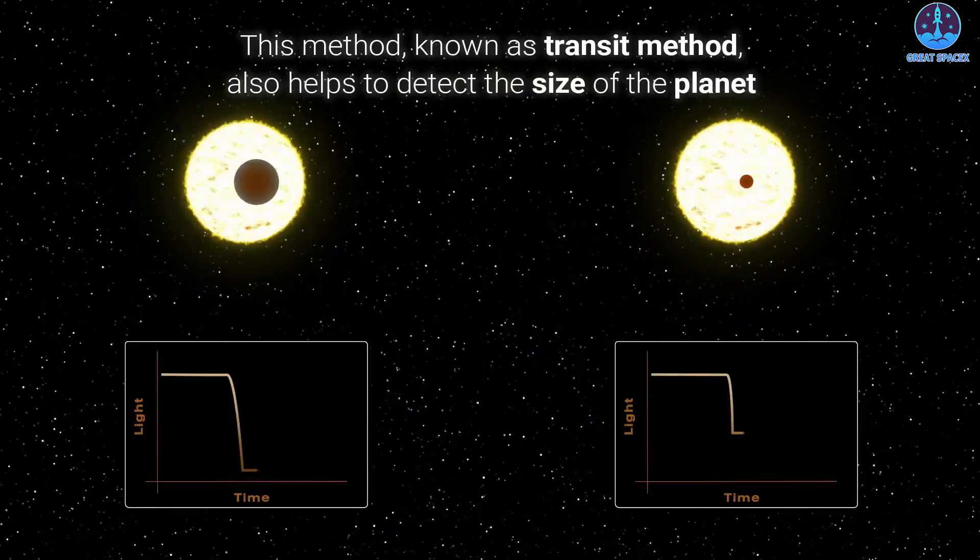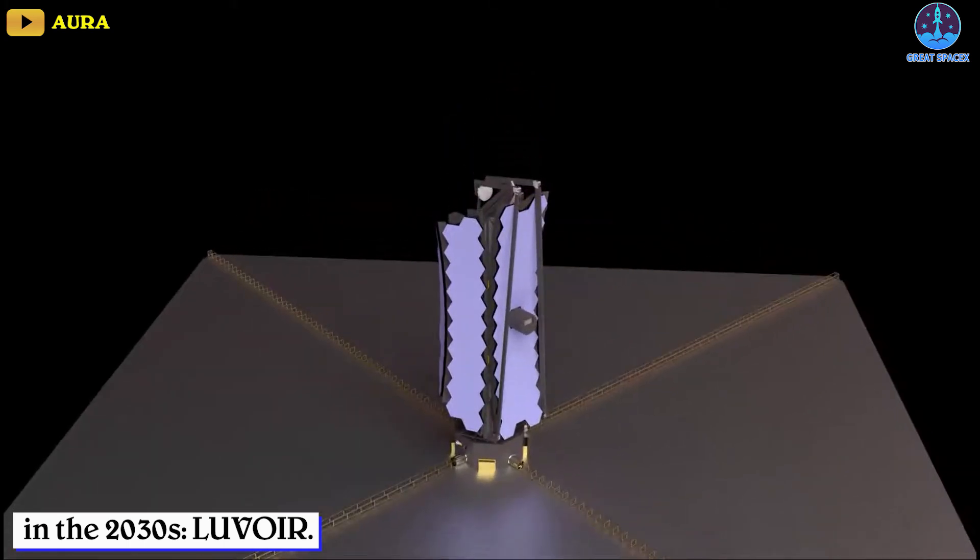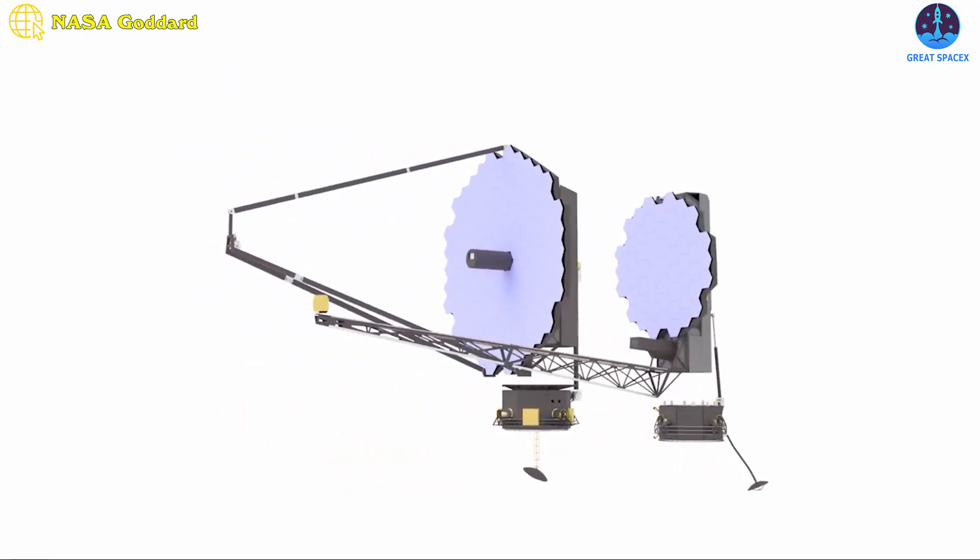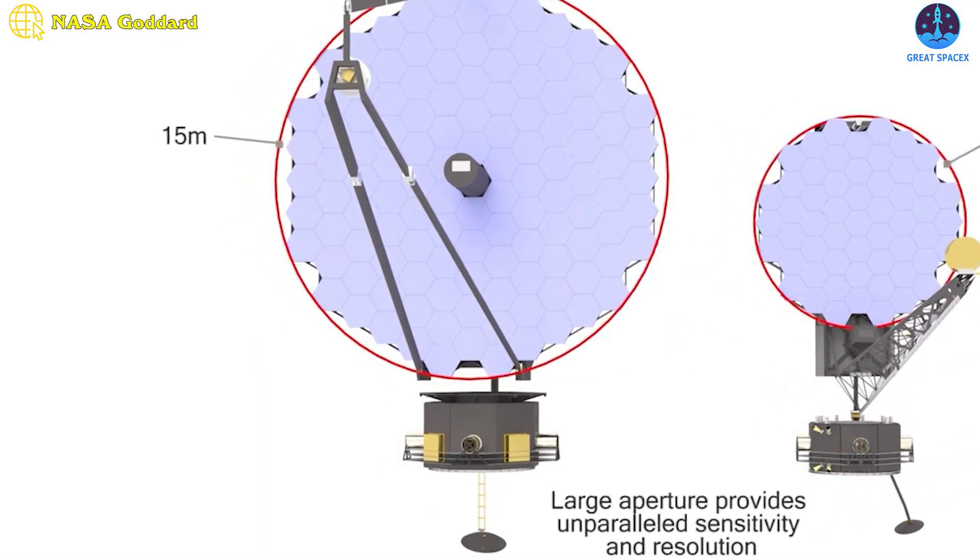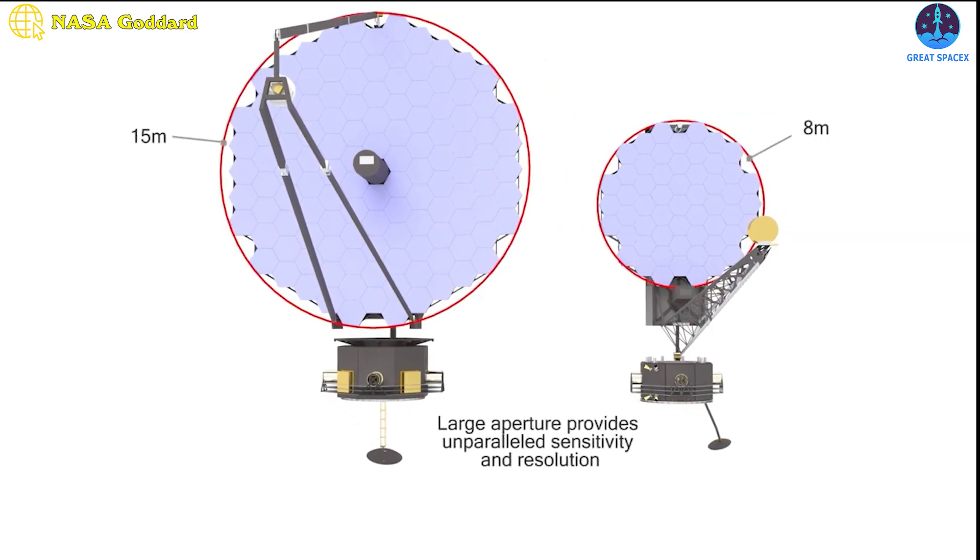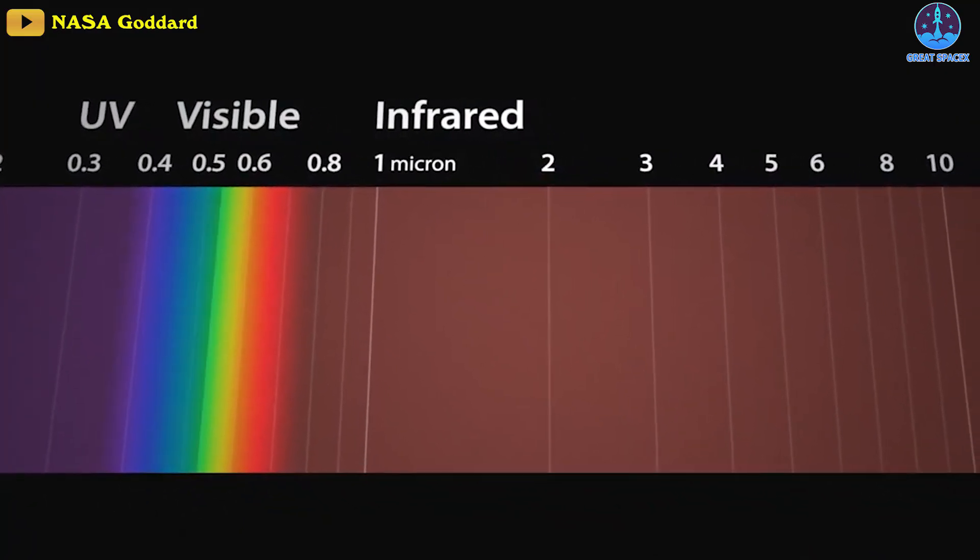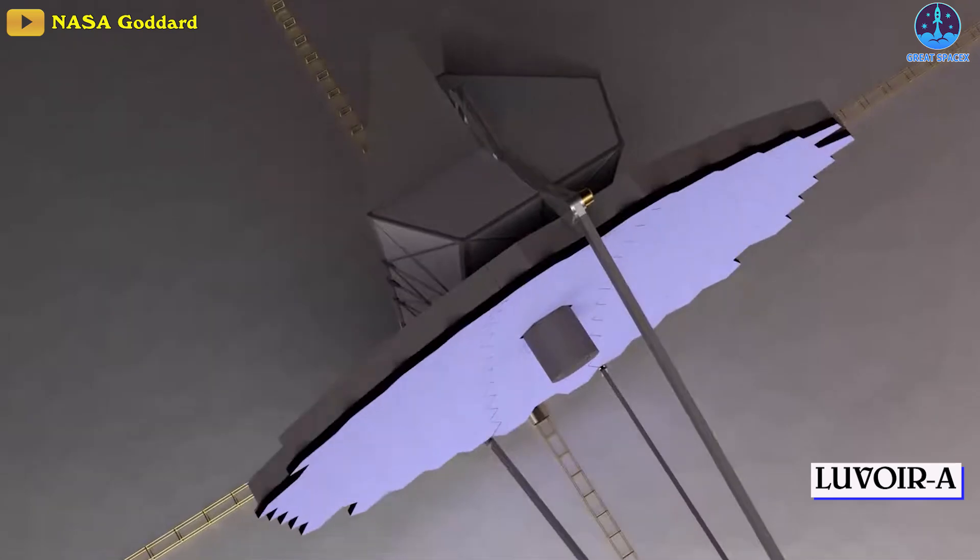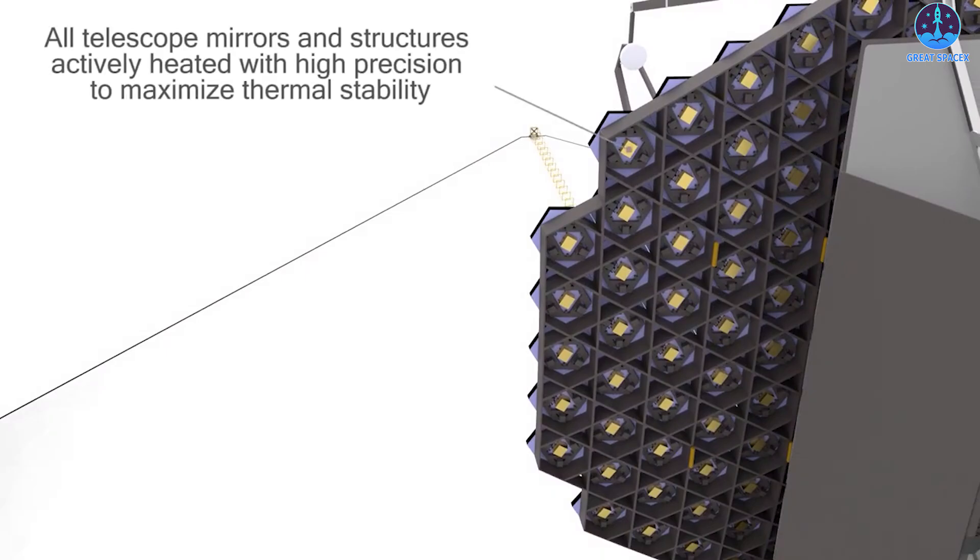There's one telescope designed to fulfill all of NASA's plans for the top astrophysics missions in the 2030s, and that's the LUVOIR. The LUVOIR study team has produced designs for two variants: one with a 15.1 meter diameter telescope mirror, which is LUVOIR A, and one with an 8 meter diameter mirror, LUVOIR B. LUVOIR would be able to observe ultraviolet, visible, and near-infrared wavelengths of light.